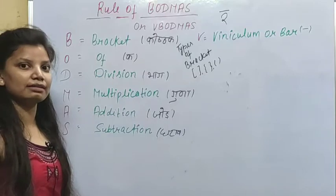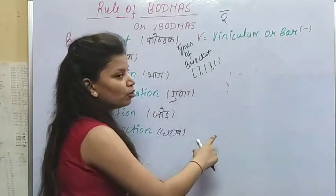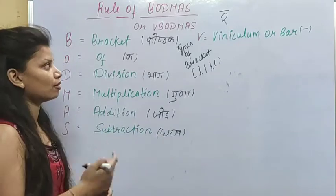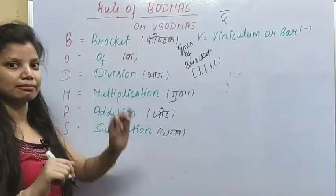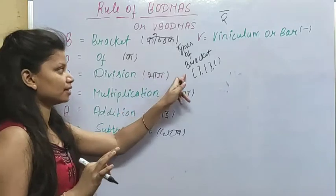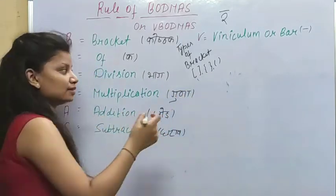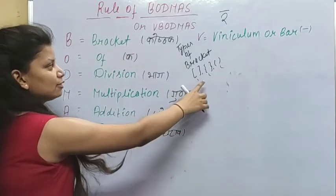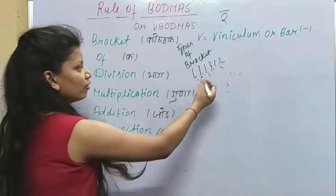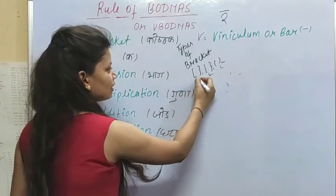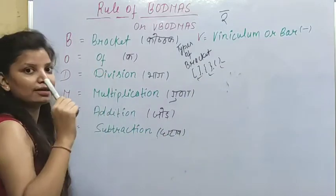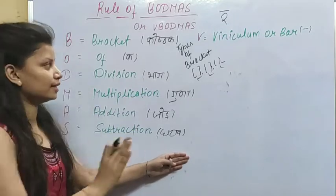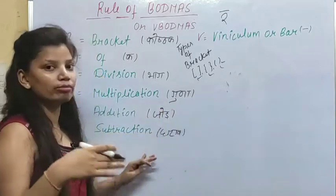And S means Subtraction. These are our BODMAS rules. In one equation with plus, minus, multiply, and divide, we solve according to these rules. Now, what are the types of brackets? There are three types: large brackets, middle brackets, and smallest brackets. We solve the smallest brackets first, then middle brackets, then the largest brackets. Next, we solve 'Of'.